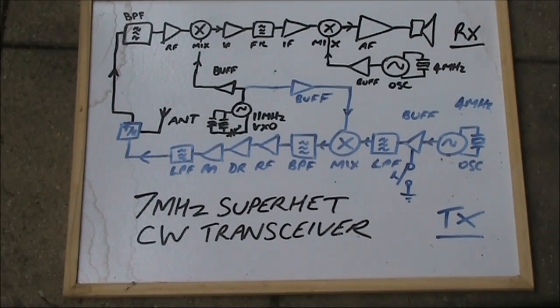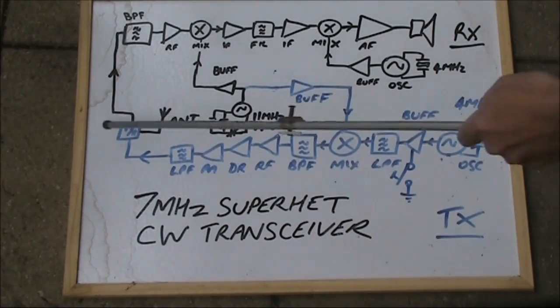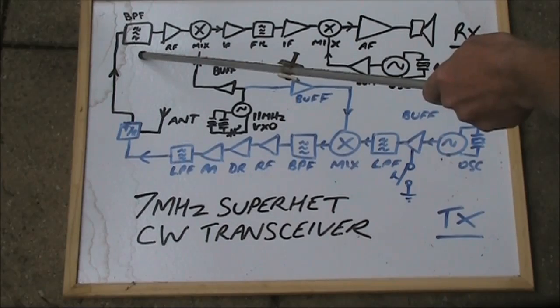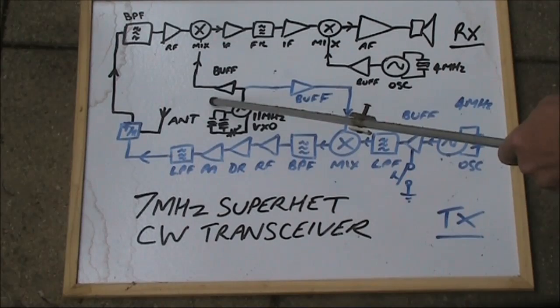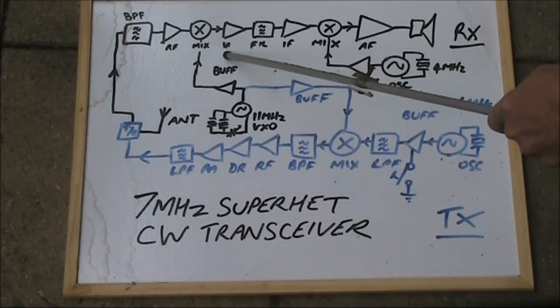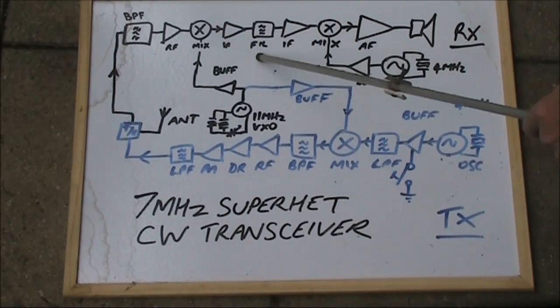Just to run through the block diagram quickly. On receive, 7MHz signals get through the bandpass filter and are amplified, mixed with the 11MHz from the local oscillator. The difference is the IF, which is around 4MHz.